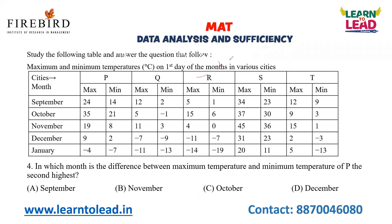In which month is the difference between maximum temperature and minimum temperature of P the second highest? The differences are: 10, 14, 11, 7, and for January: minus 4 minus of minus 7 becomes minus 4 plus 7 equals 3. The second highest falls in the month of November. November is the answer.